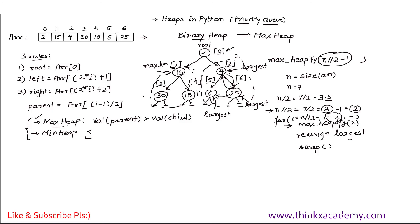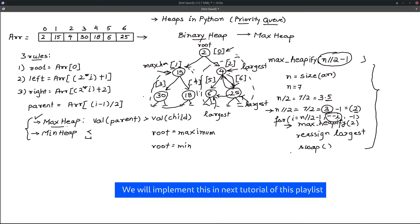An important property: in a max heap, the root always contains the maximum element, since we swap values up through the tree. In a min heap, the root contains the minimum element. This covers the theoretical part of binary heaps, max heap, and min heap. Before starting implementation, try out this algorithm yourself to see if you can do it.